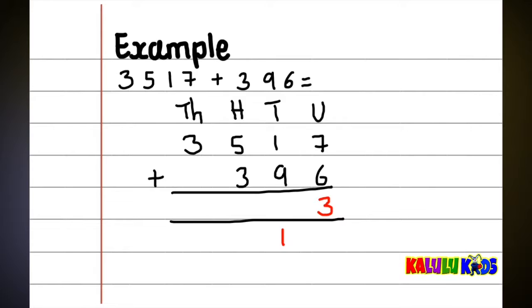Now, you say 1 plus 9, you will get 10. But now, remember to add the 1 that you carried over from the units column. That makes it 11. So, you have to carry the 1 to the next column, that is the hundreds column.